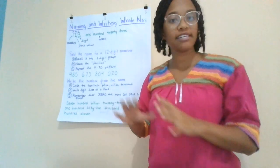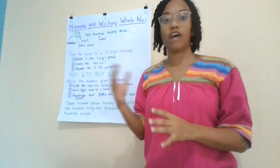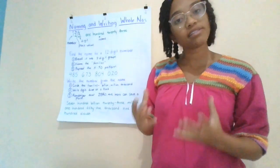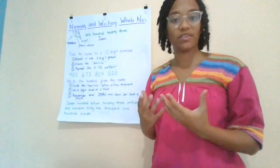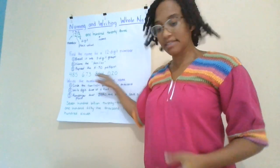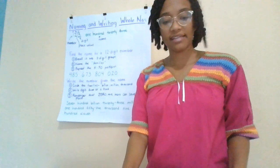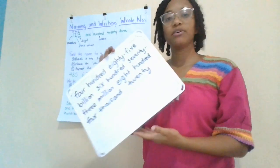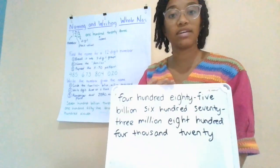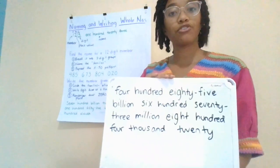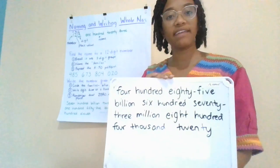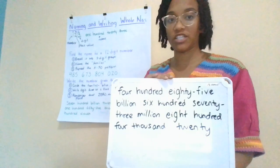Not every single family will have a hundreds place and a tens place and a ones place. Some of them might be filled with zeros, so just keep a lookout for that. So this number has the name 485,673,804,020. That's how we can find the name for a 12-digit number.